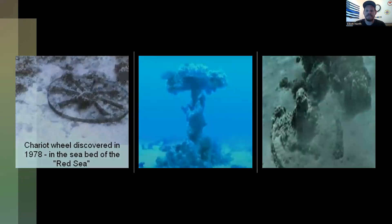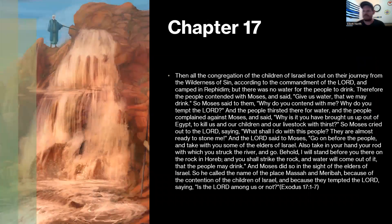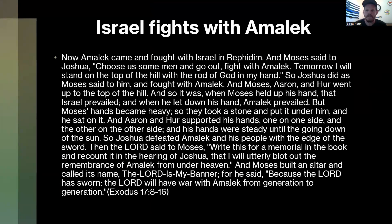Ron White went down there and theorized where some of these events took place, and found archaeological records. When that happens, they sing a song of redemption — 'There's none like our God, he's the greatest God in the world.' Then the next chapter: 'What did you do, Moses? You brought us out here to die — was there not enough tombs in Egypt?' Moses strikes the rock, consults God, and the people are given water. Then the Amalekites come out and go after Moses and Joshua, and the Israelites win the battle as long as Moses's arms are held up.